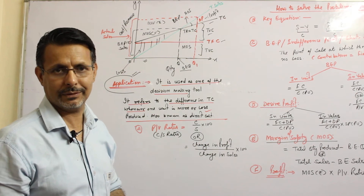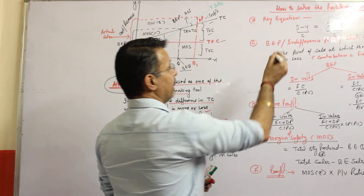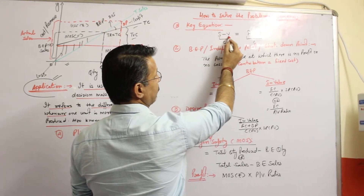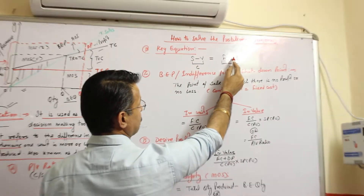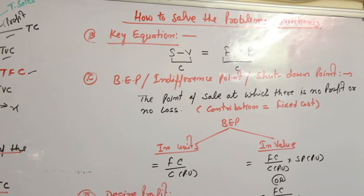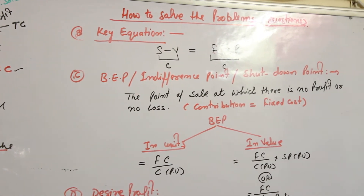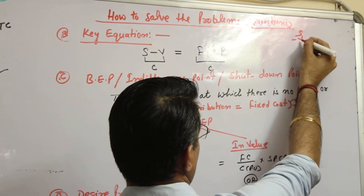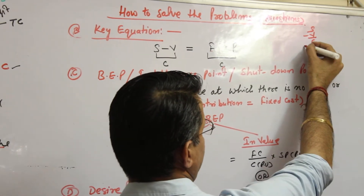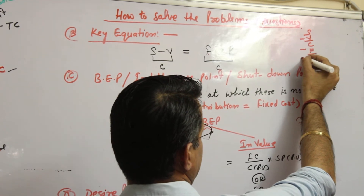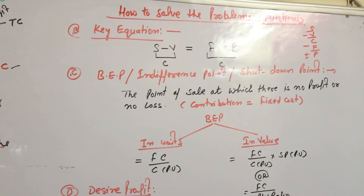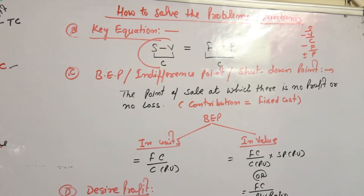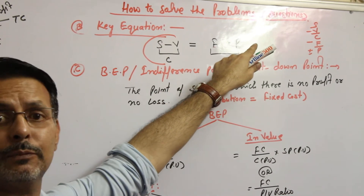The very first thing is the key equation. In this key equation, S minus V is equal to fixed cost plus or minus profit, starting from the income statement as per cost accounting. Sales minus variable cost is equivalent to contribution, minus fixed cost, giving plus or minus profit. So S minus V covers sales and price per cost, plus or minus profit or loss.